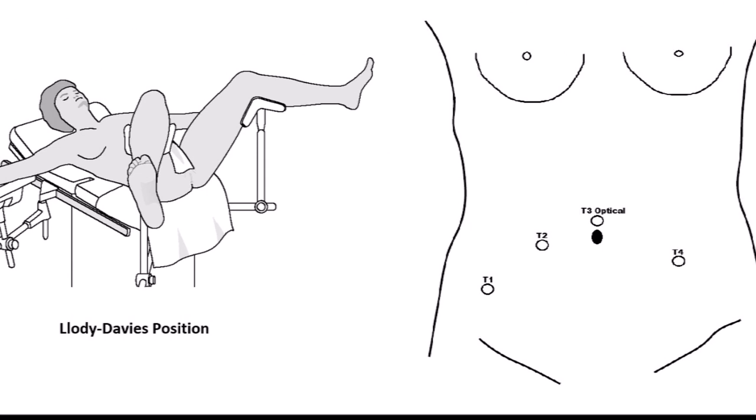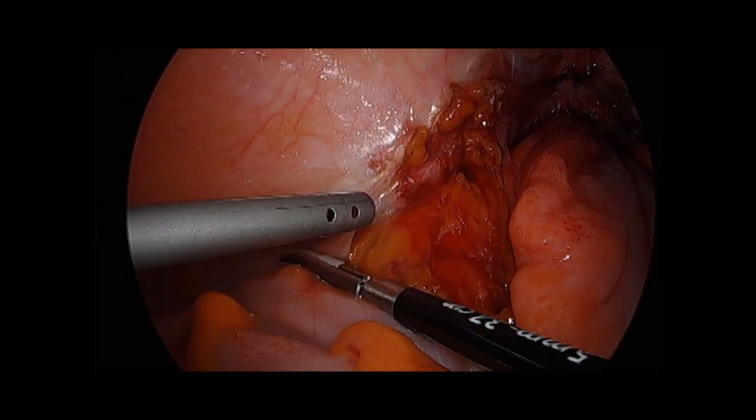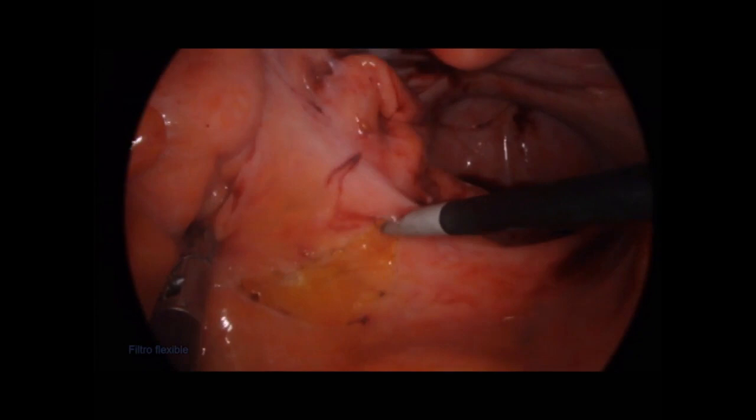The patient was positioned in the Lloyd-Davis position and four trocars were placed according to the needs of the surgery. Surgery begins with adhesion release. A marking of the pelvic peritoneum to be removed with peritonectomy is carried out.